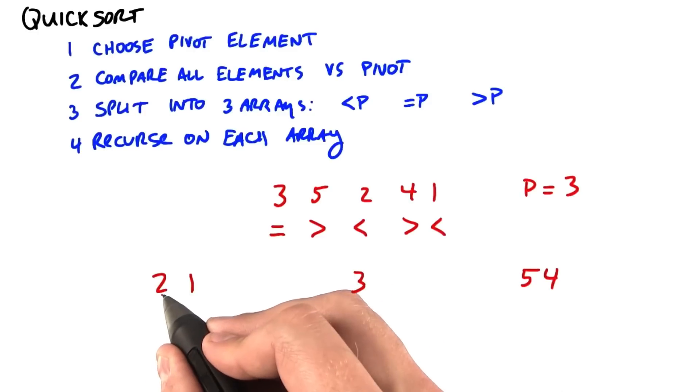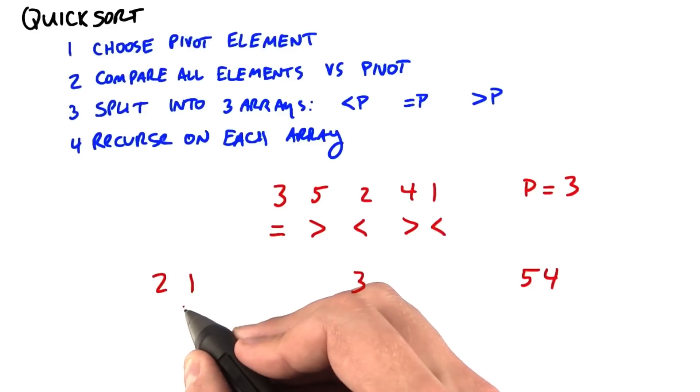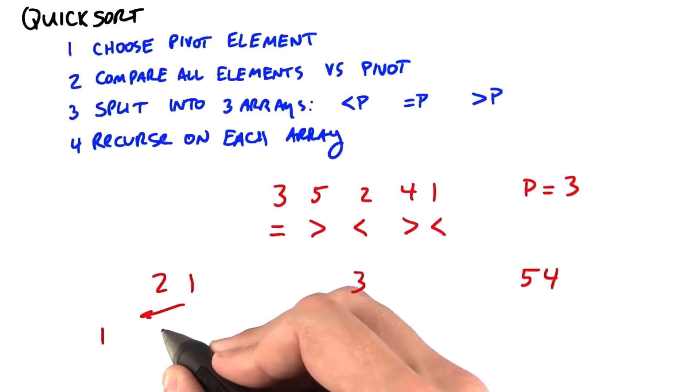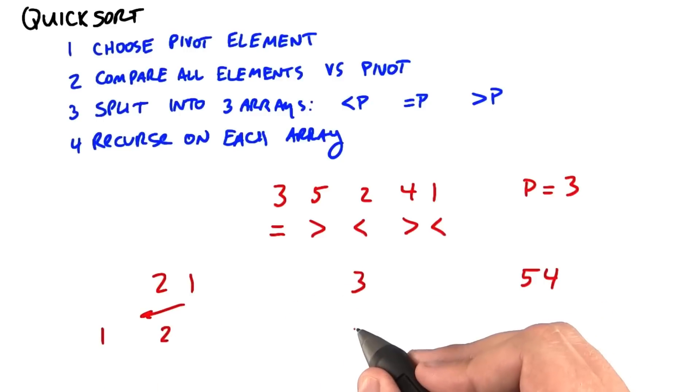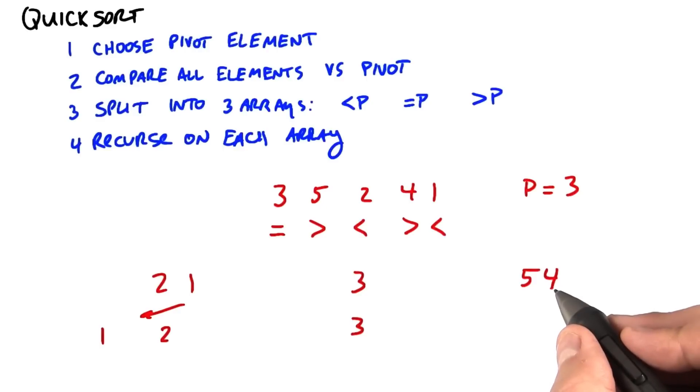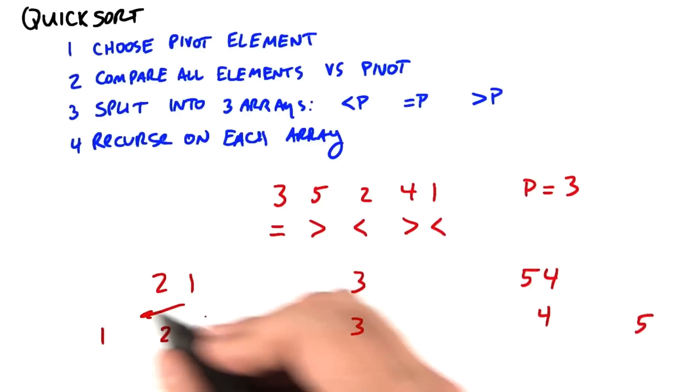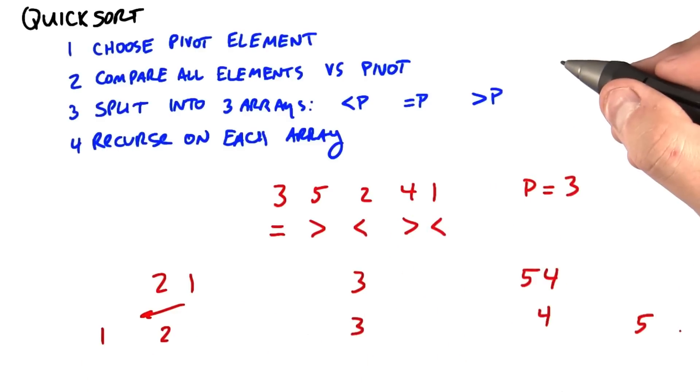So when we have 2 and 1, let's say we choose 2 as the pivot. Then we'll divide this into smaller than the pivot and equal to the pivot. This doesn't need to be recursed because it only has a single element. And let's say we choose 4 as the pivot here. This is greater than the pivot. This is equal to the pivot. And now we have a completely sorted array.